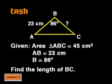Now it's your turn. The area of triangle ABC is 45 square metres. AB is 23 centimetres and angle B is 86 degrees. Find the length of BC.